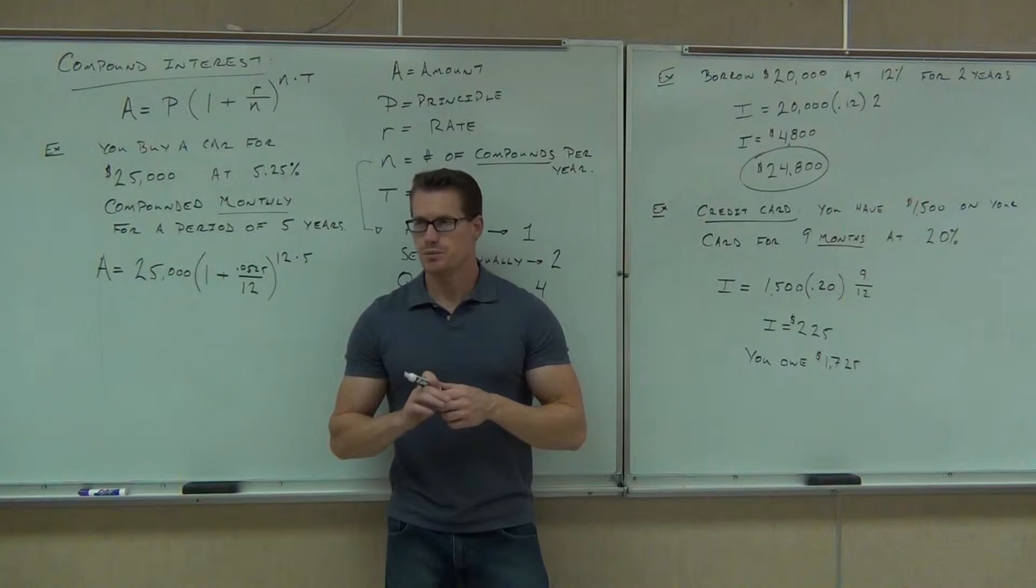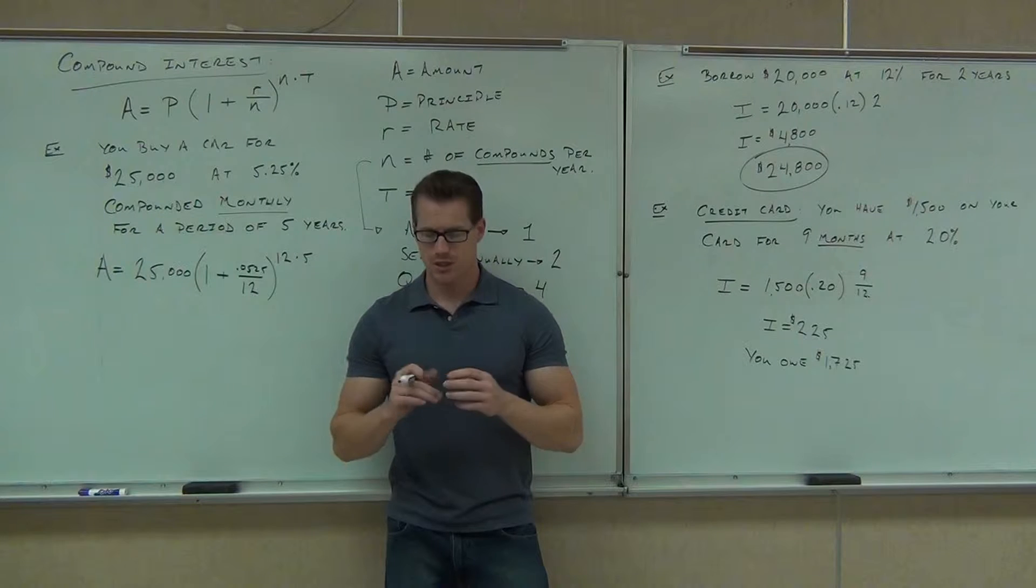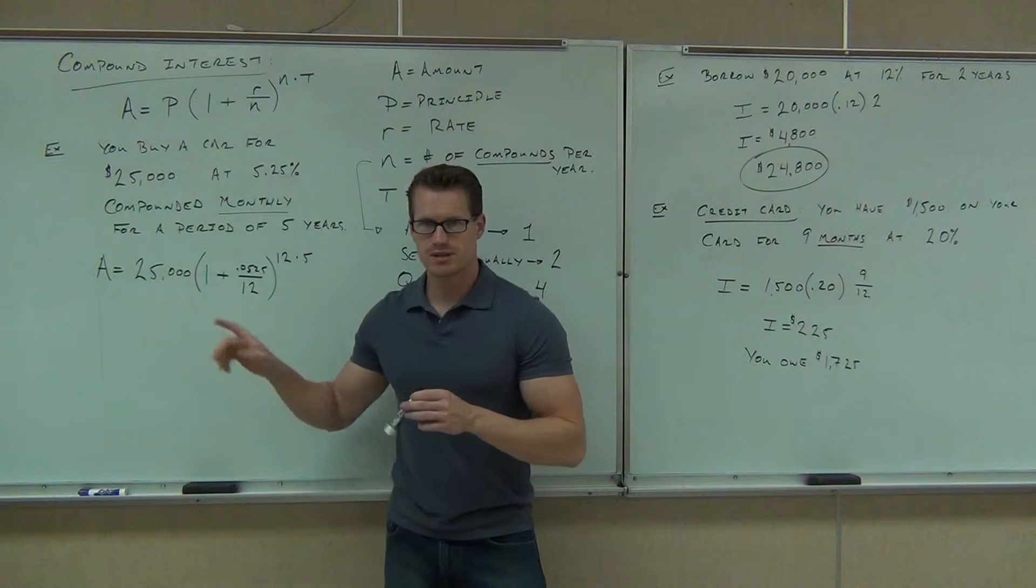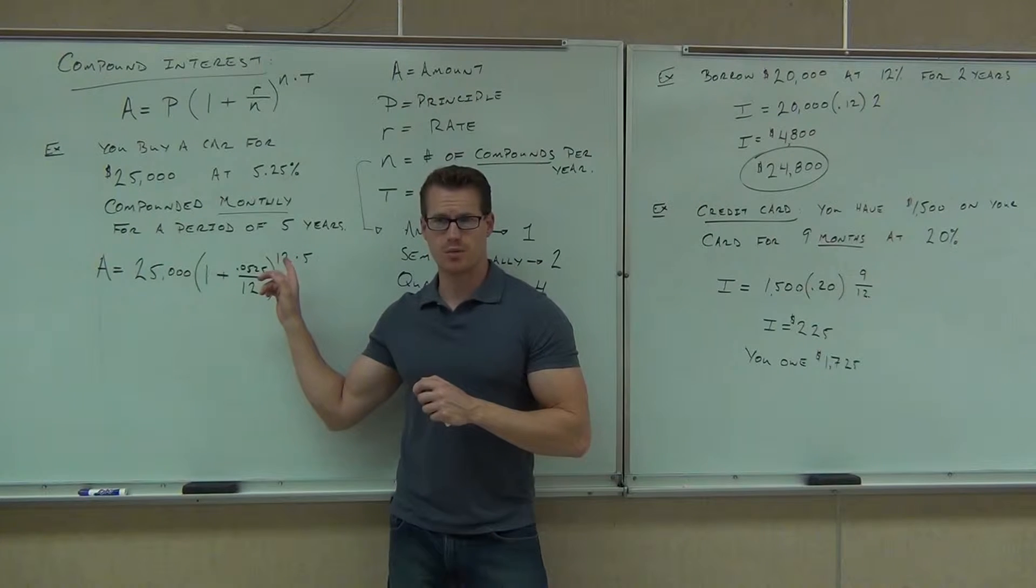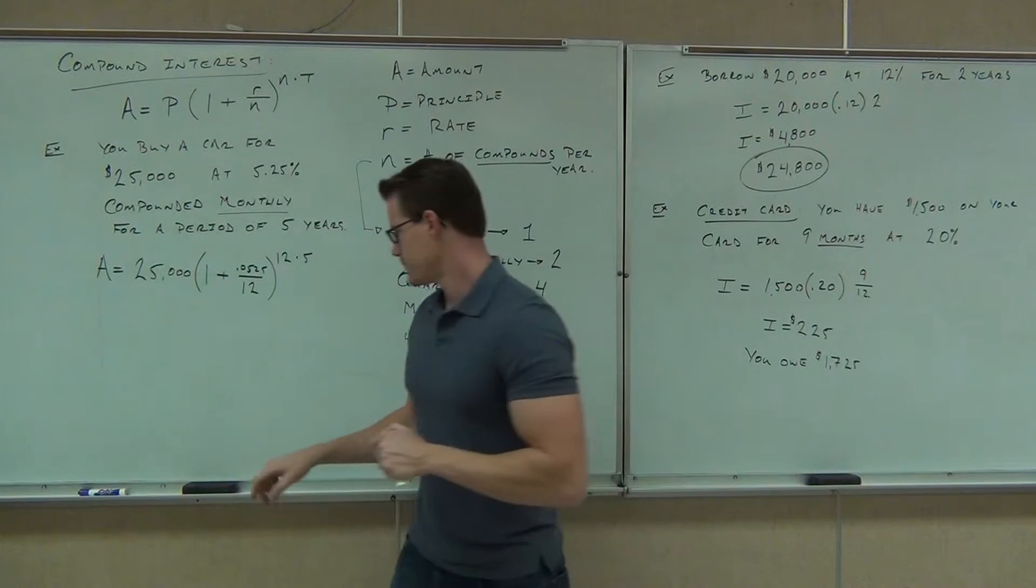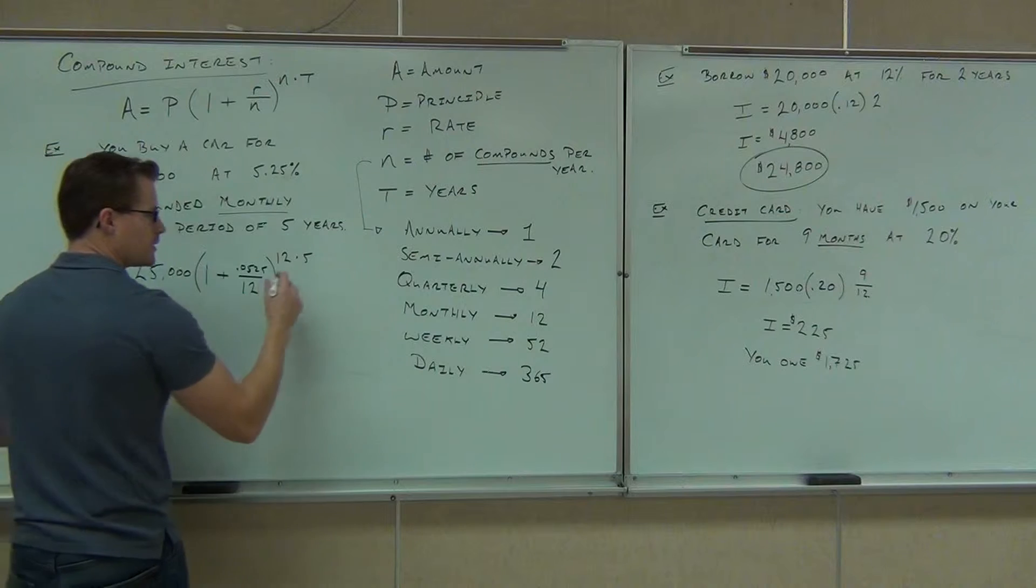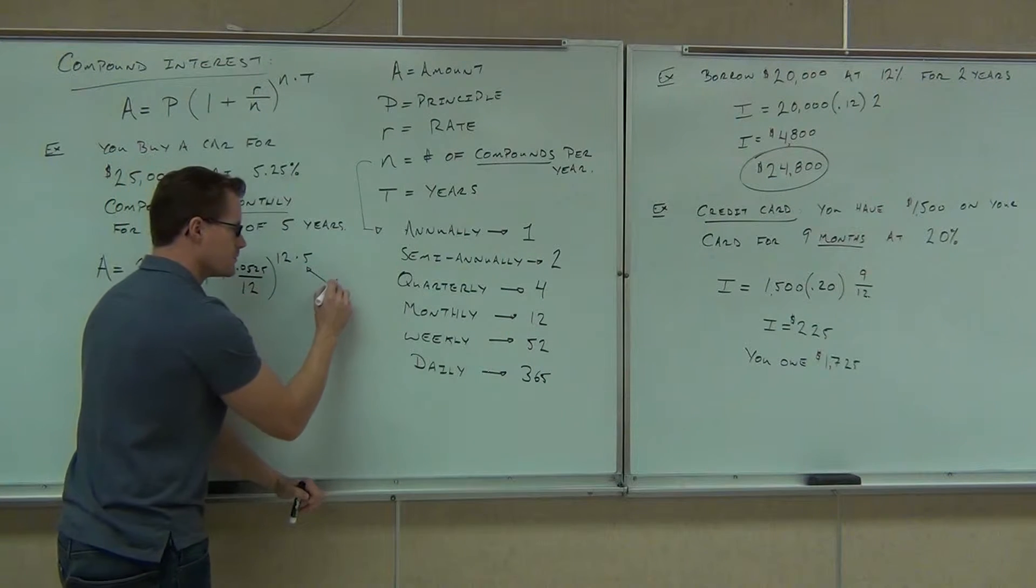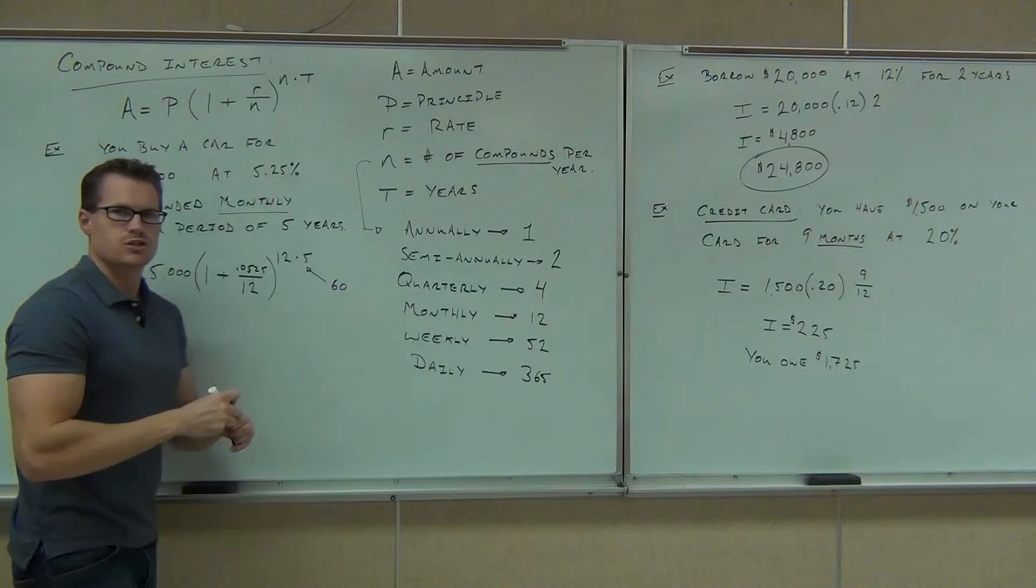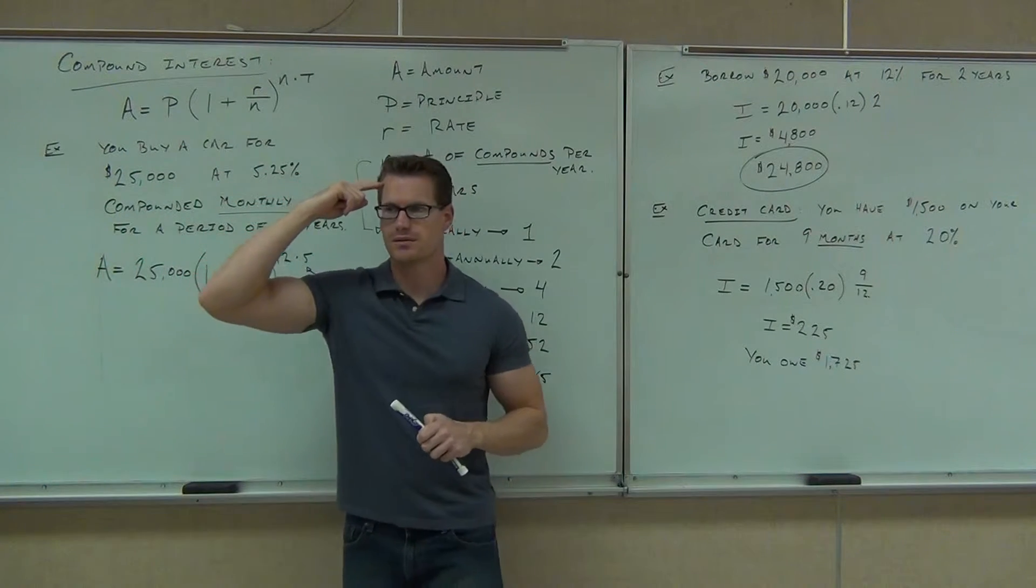The first thing you do is you do this exponent, and that's the only number you'll have to write down. After that, everything's done in one step. So do 12 times 5, and write it off to the side, or memorize it. That's going to be 60. So you memorize 60. Now clear your calculator.